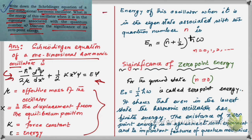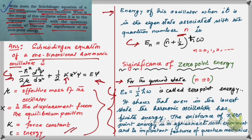The energy of this oscillator when it is in the eigenstate associated with quantum number n is given by the expression E_n = (n + ½)ℏω, where n = 0, 1, 2, and so on. Here μ is the effective mass of the oscillator, k is the force constant, E represents energy, and x is the displacement.